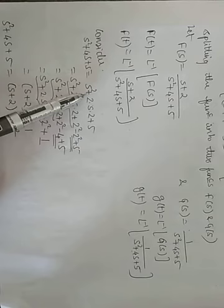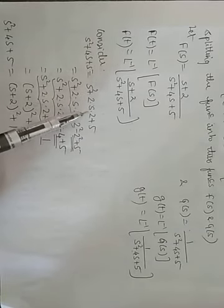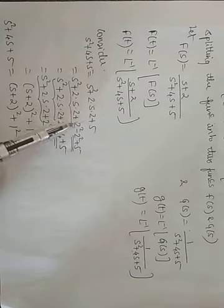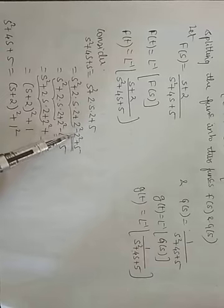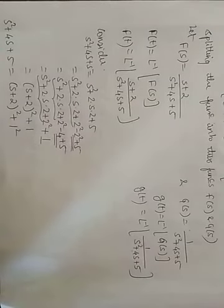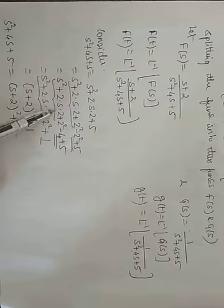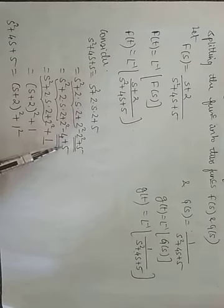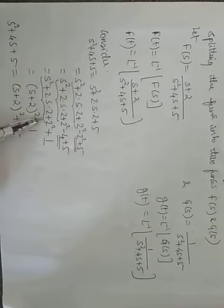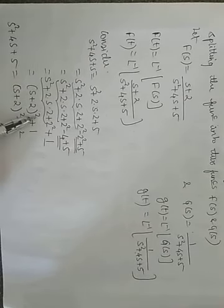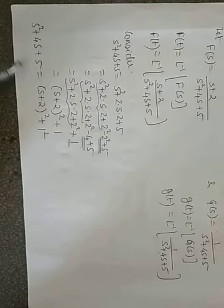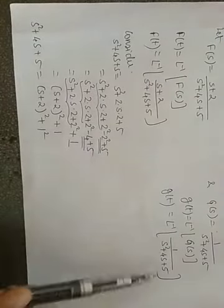Since a² = s², a = s. We write a² + 2ab, where b² is missing. So we add and subtract b² = 4. Thus s²+4s+5 = (s+2)² + 5 − 4 = (s+2)² + 1. This is the simplified form of the denominator.